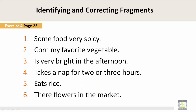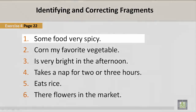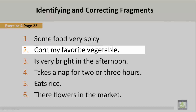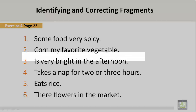Identifying and correcting fragments. Exercise four, page 22. Let's look at these examples. Number one: 'Some food very spicy.' This is incorrect. Number two: 'Corn my favorite vegetable.' This is incorrect. Number three: 'Is very bright in the afternoon.' This is incorrect.